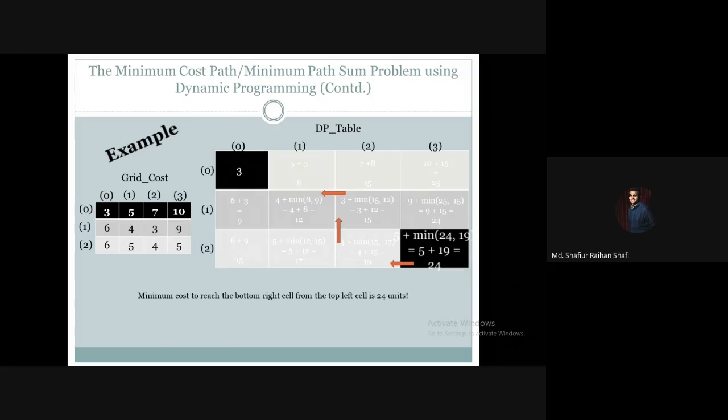From (1,1), which cell did we come from? We came from the upper cell which is (0,1), so we mark that. From (0,1), the only option is (0,0). So from bottom right cell to top left cell, we've traced the path.